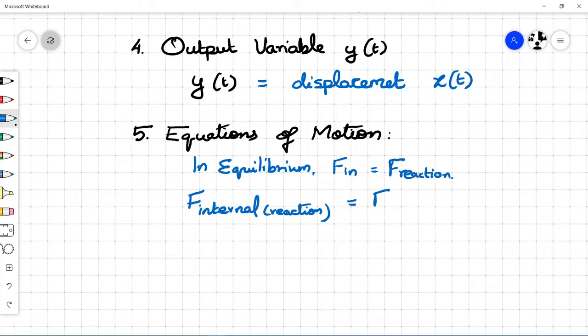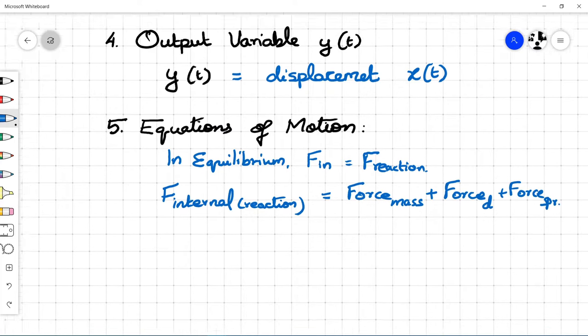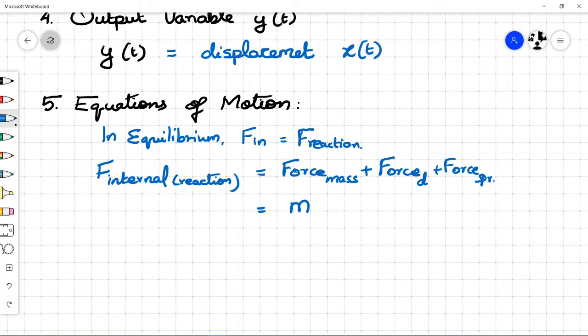Force due to mass is equal to mass times acceleration of the object. Force due to damper is damping coefficient times velocity of the object. Force due to spring is spring constant times displacement of the object x(t).